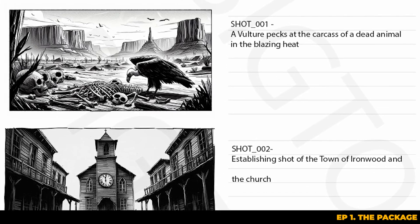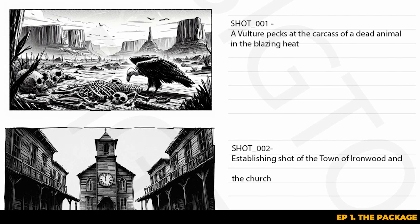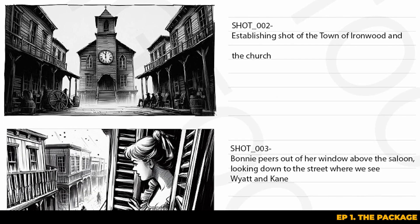For instance, in shot one we can see a vulture pecking at a carcass under the blazing sun. Immediately from this small description you get an idea of the tone, mood and visual style for the scene. Shot two moves to an establishing shot of the town Ironwood, with a particular focus on the central church at the end of the street. This obviously seems to be a pivotal location in the story.